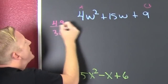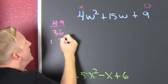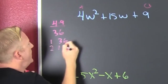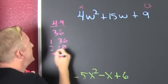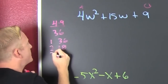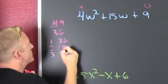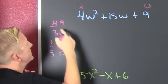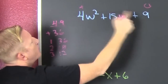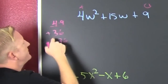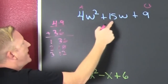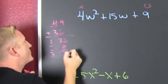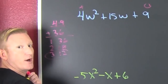And then I break it down. That's 1 and 36, that's 2 and 18, that's 3 and 12. I'm looking for the factors of 36. Because that product was positive, they need to add to be 15. Looks like I have 3 and 12.